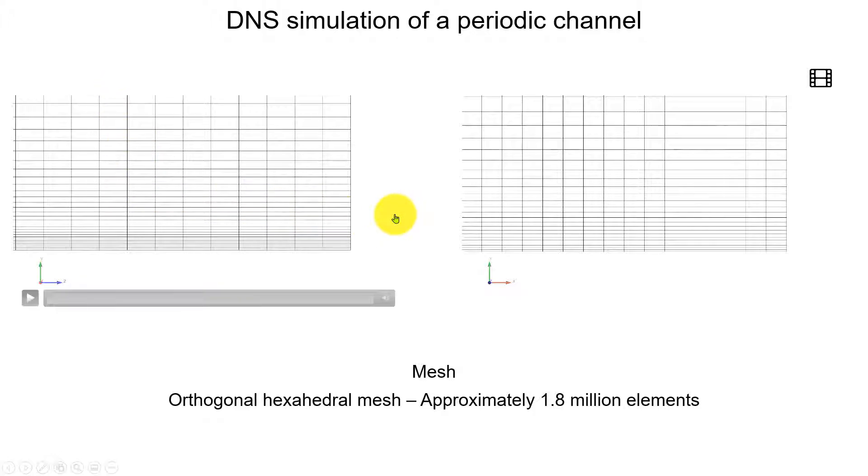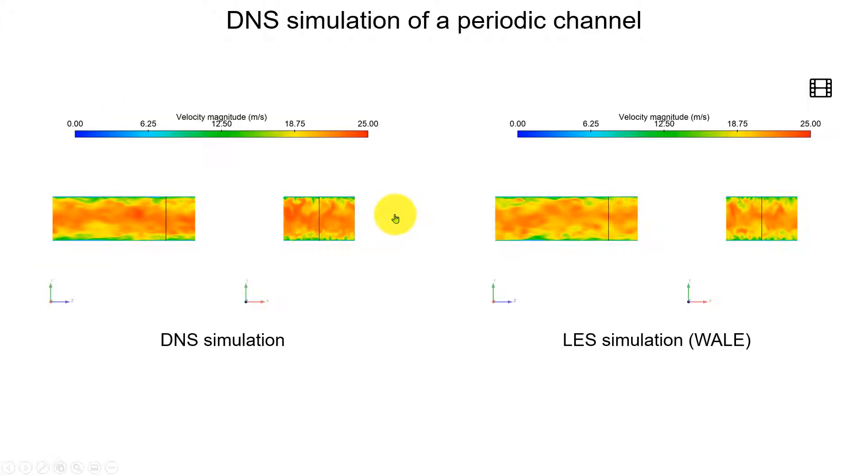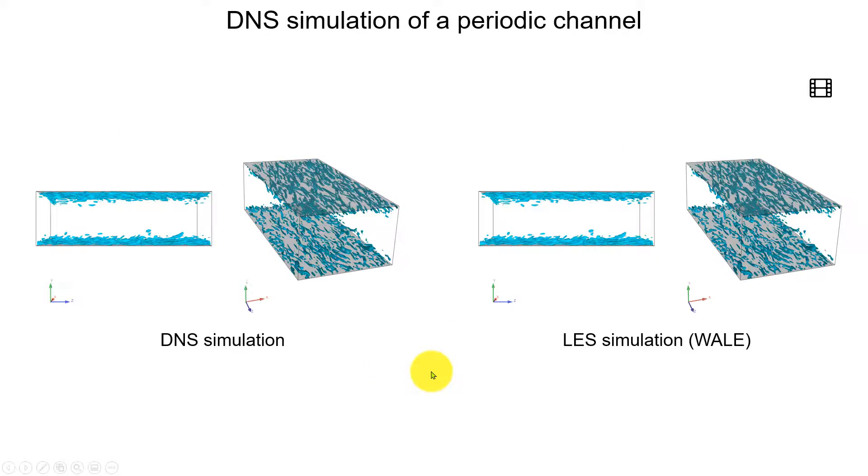So in a result center, we're computing the solution. Here we're comparing DNS and LES simulations. Both of them are scale resolving simulations. We're resolving all the scales. As you see here, solutions are very similar. Here we are not introducing models. Here we introduce a LES model. We can use wall functions. Later we see what are those wall functions and we can save some time. But it still is something computationally expensive.